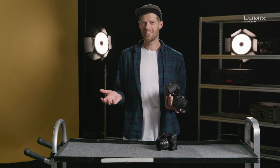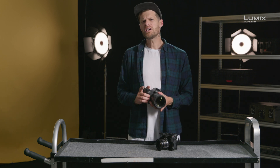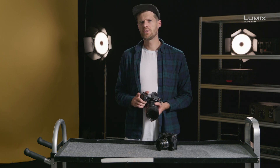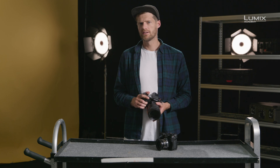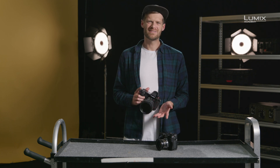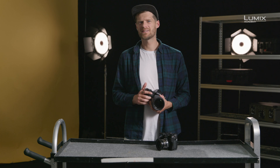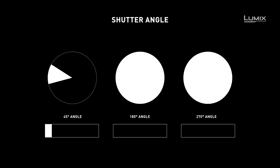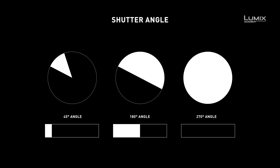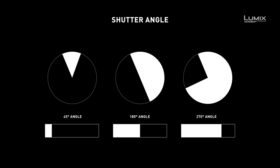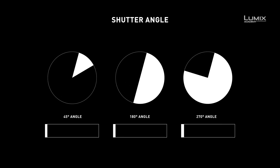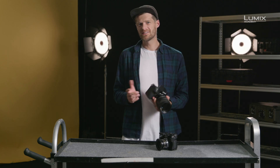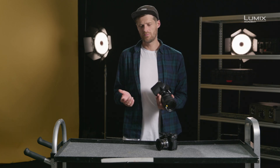Why angle? Why not seconds? Shutter angle is a way of describing the shutter speed relative to the frame rate. The term is now a bit outdated and harks back to the time when cameras had rotary shutters, where a disc with an angled opening would spin and let in light once per revolution to expose each individual frame. However, the terminology has remained in use until today.